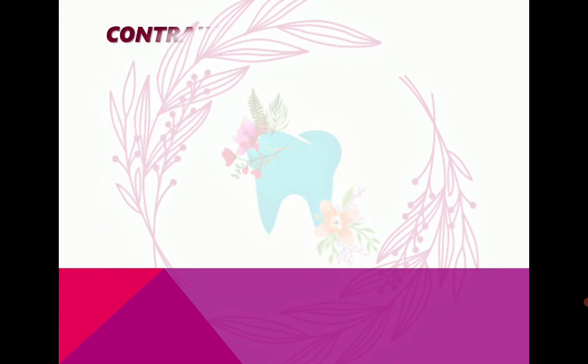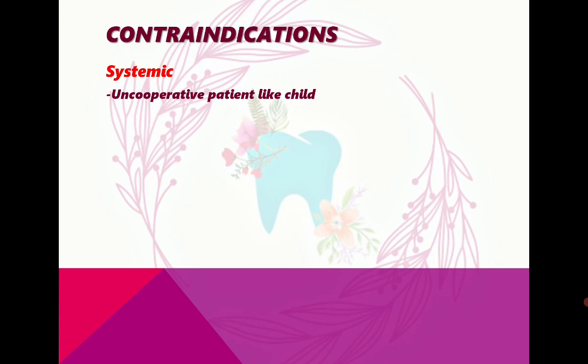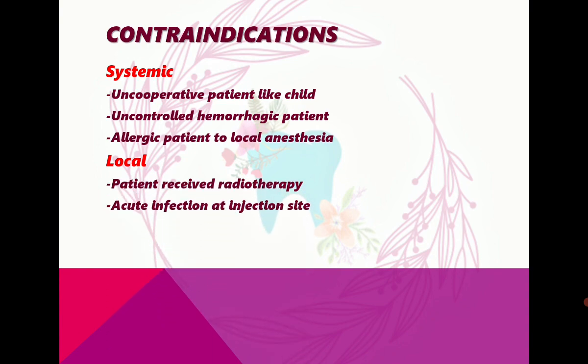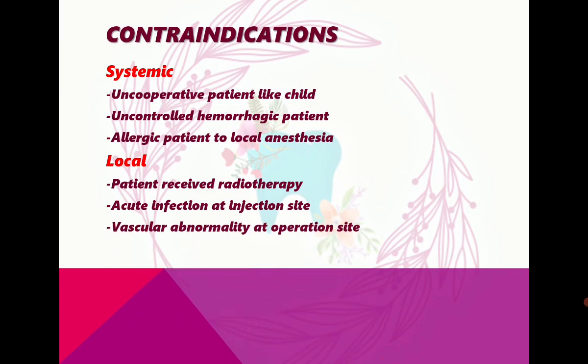Now let's check the contraindications, which have two divisions — systemic and local. Systemic contraindications include uncooperative patients such as pediatric patients, uncontrolled hemorrhagic patients, and allergic patients. Local contraindications include patients who have received radiotherapy, acute infection at the injection site, and vascular abnormality at the operation site.